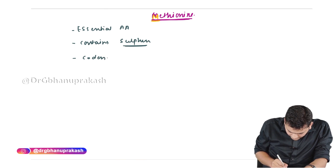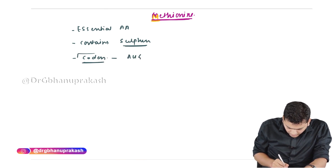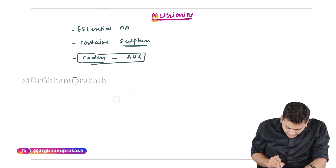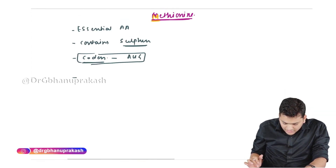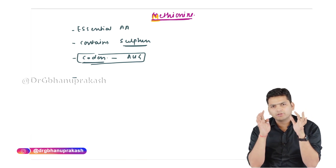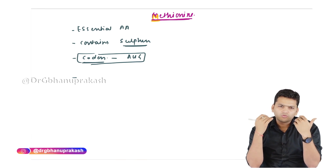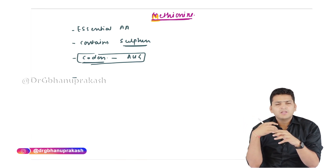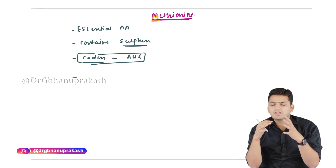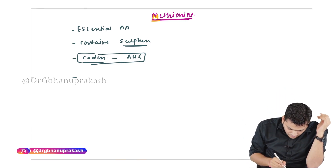The codon of methionine is AUG - we need to remember this one specifically. Methionine is an essential amino acid and it is particularly low in pulses; the quantity of methionine is almost absent in pulses. Vegetarians who are solely dependent on pulses as their protein source are at risk of methionine deficiency.